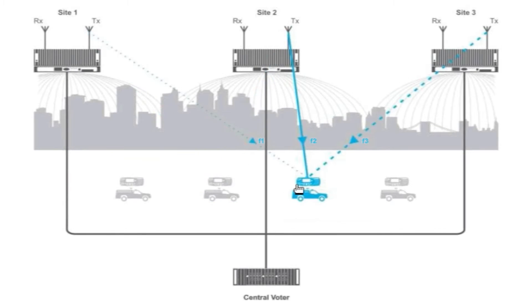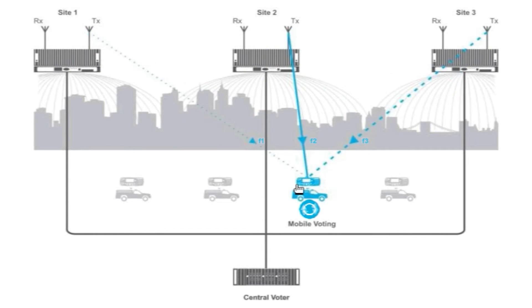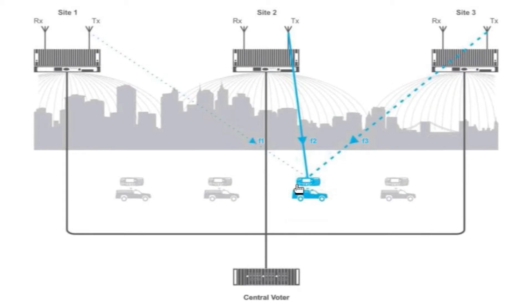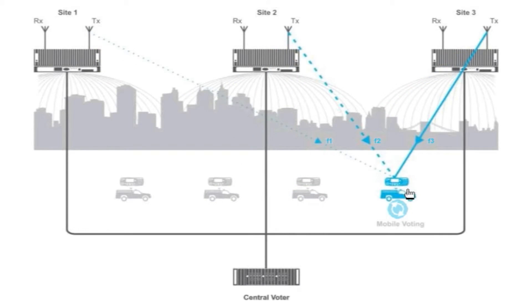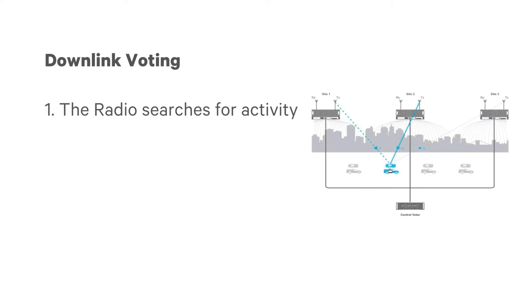Downlink voting, which takes place in the subscriber unit, allows the radio to automatically select the best quality channel from a group of channels that are transmitting the same audio. This takes place in three stages. First, the radio searches for activity on the channel. This is similar to scanning.